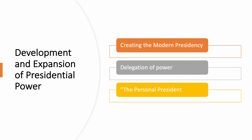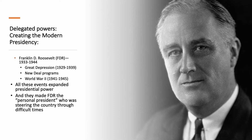So we're going to talk about the development and expansion of presidential power — how the modern presidency was created in large part through delegation of power. We talked about the four different kinds of powers: enumerated, implied, and inherent, and now we're going to talk about delegation — powers that were delegated to the president by Congress. Then I'm going to talk about the personal president, that is the president who talks directly to the public in ways that Congress can't.